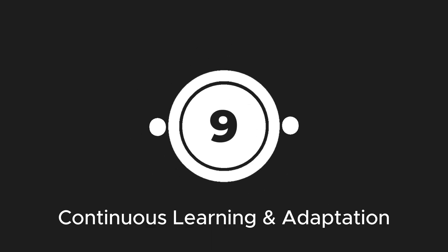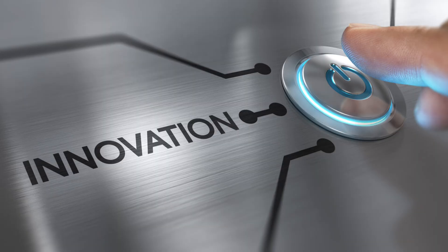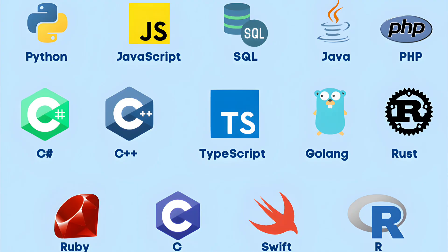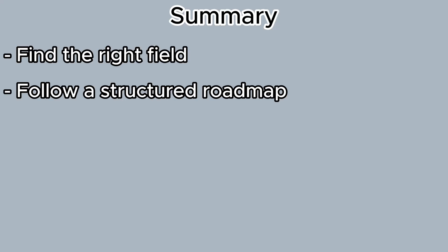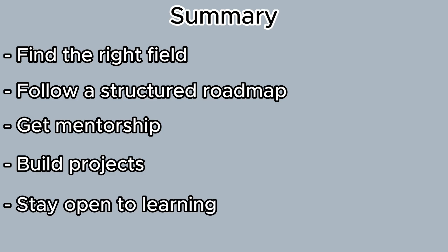The last step is continuous learning and adaptation. Tech is always evolving, so keep learning new languages, frameworks, and tools to stay relevant and keep your skills sharp. To sum it up: find the right field, follow a structured roadmap, get mentorship or use AI tools, build projects, and always stay open to learning new things.